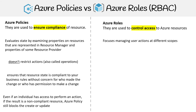On the role side, it's very simple — it focuses on managing user actions at different scopes, and it does apply restrictions on Azure resources. So in summary, Azure Roles control what you have access to, while Azure Policies ensure compliancy.